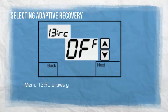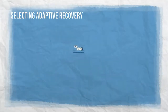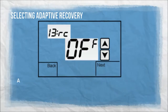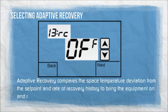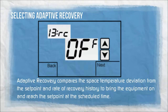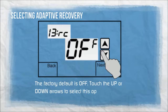Menu 13RC allows you to select the adaptive recovery option when the thermostat is configured as programmable. Adaptive recovery compares the space temperature deviation from the set point and rate of recovery history to bring the equipment on and reach the set point at the scheduled time. The factory default is off. Touch the up or down arrows to select this option.